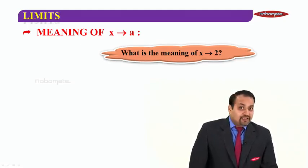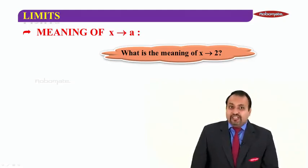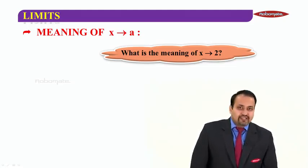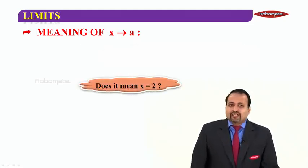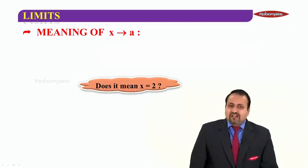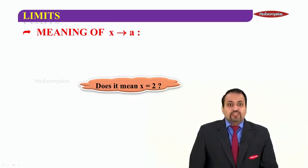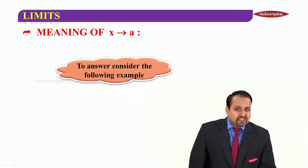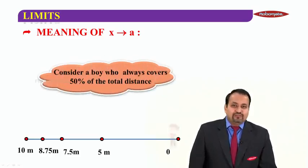A is in general, so it can be particularly X tending to 2, X tending to 3, something like that. So, what is the meaning of that? Does it mean X is equal to 2? Does it mean that X is equal to something else? To answer this particular question, we will consider the following example.